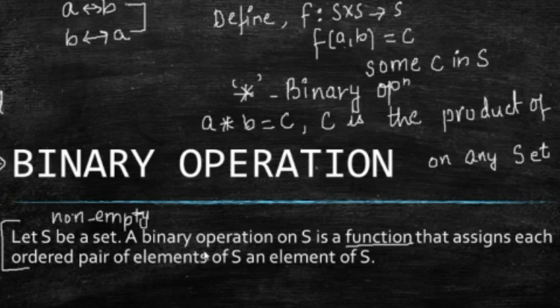And, functions are defined from domain to co-domain. So, domain of this function, domain of binary operation, is the Cartesian product of S×S. Because, I have to find out, or I have to consider ordered pairs of the elements of S. And then, the co-domain, or the range of such functions is S only. We can't go out, because there is no point in going outside S. Because we are having only one set S.